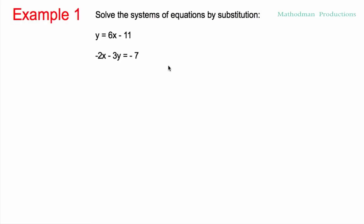Let's go see what I'm talking about with this first problem right here. Example one: solve the system of equations by substitution. When it says solve the system of equations, all you're doing is solving for x and y — finding the value that will work for x and y so that when you plug it in, it makes a true statement for both equations.